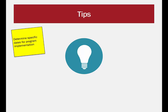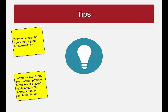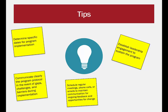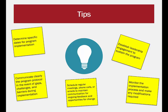1. Determine specific dates for program implementation. 2. Communicate clearly the program protocol in the event of gaps, challenges, and barriers during implementation. 3. Establish leadership engagement to sustain the program. 4. Schedule regular meetings, phone calls, or emails to maintain communication for ongoing feedback and opportunities for any changes to the implementation plan. 5. Monitor the implementation process to assess if the program should be continued or modified and any implications for that modification. To do so, consider the program's: a. perceived usefulness by all involved individuals; b. time allocation; and c. sustainability, both internally and externally, and what resources would be necessary.